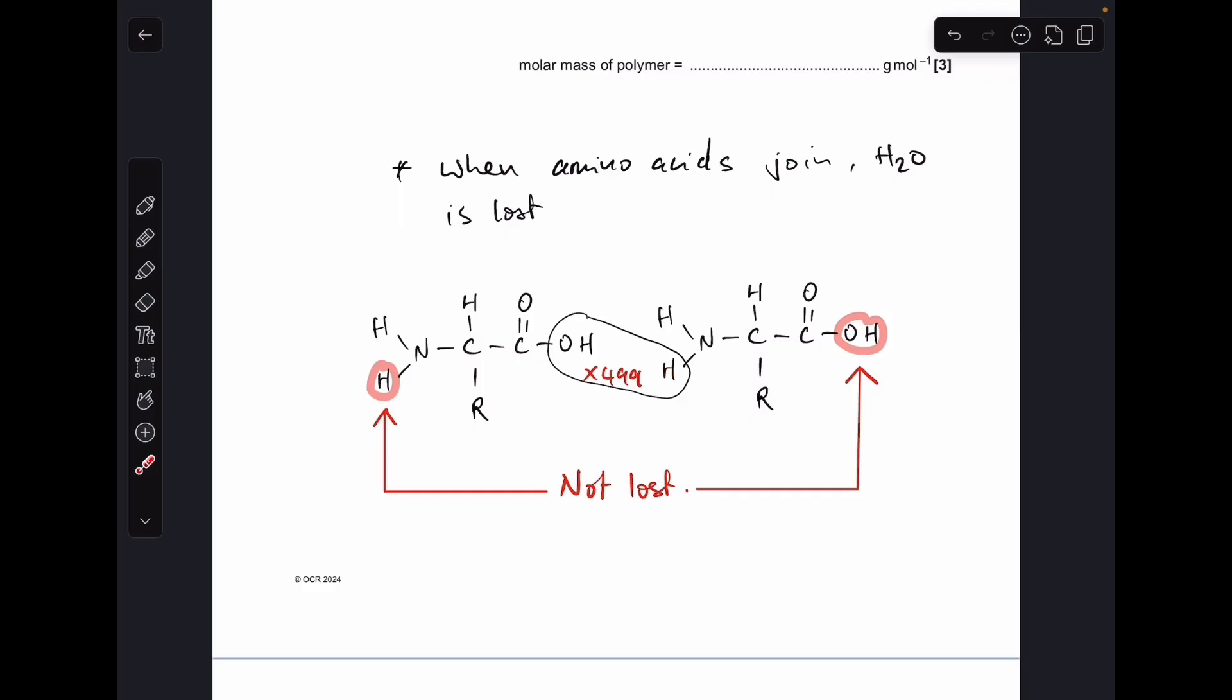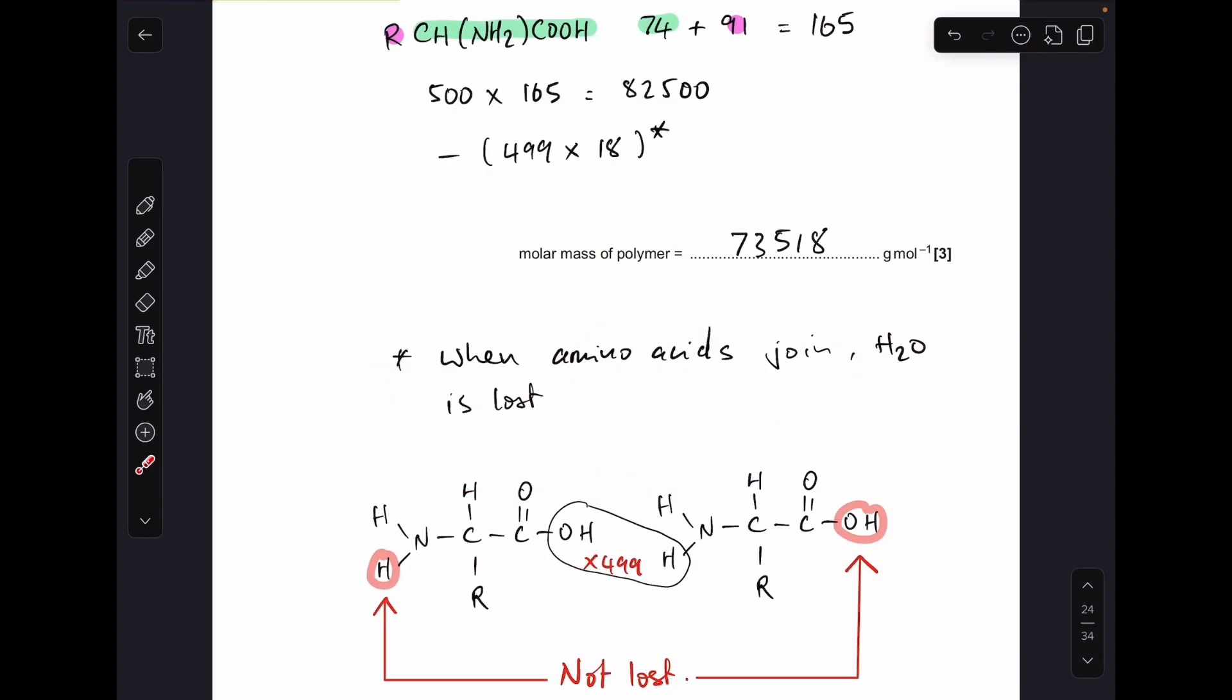But the thing to appreciate is that won't happen at the very end of the chain. So yes, it's made from 500 monomers, but we're going to have to remove 499 lots of 18 for the H2O that's lost. So that means the MR of the polymer is 73,518, so very well done if you got that right. I think that's tricky.